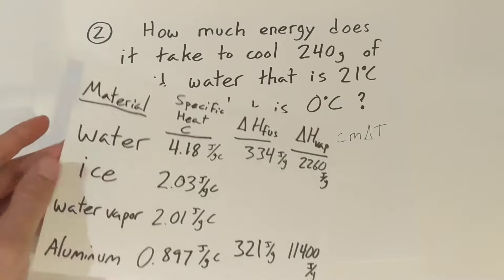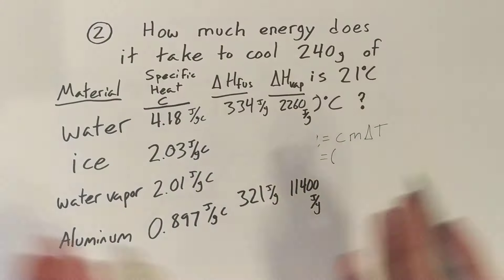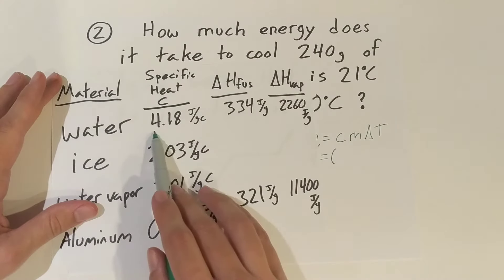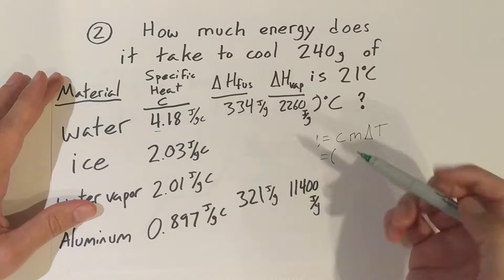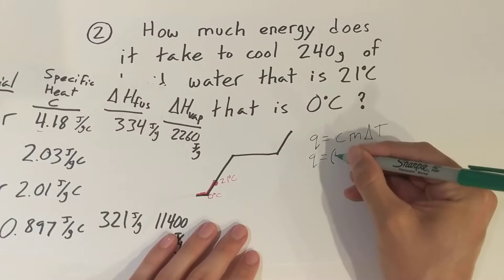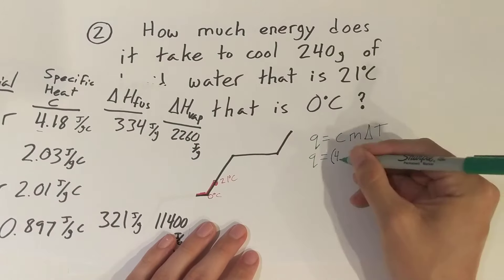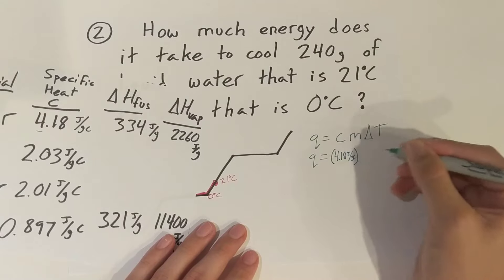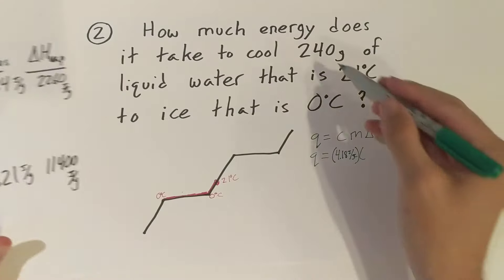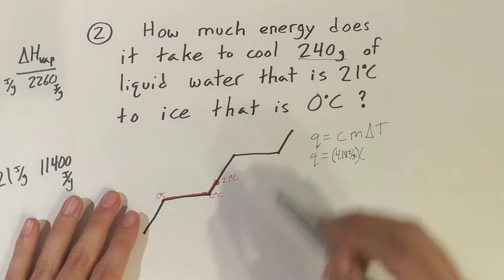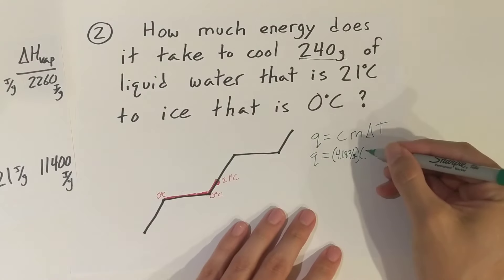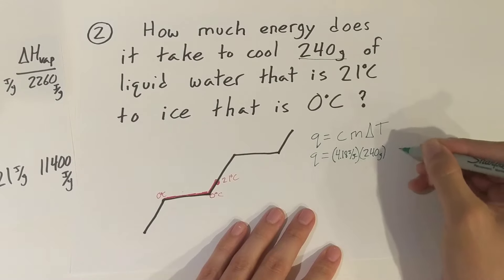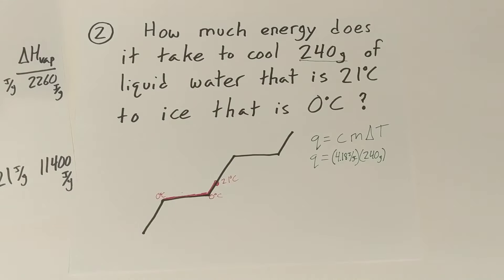Let's start plugging everything in. C is our specific heat. The specific heat of water — we're going to have to look at our table. The specific heat of water is 4.18 joules per gram Celsius. So we put that right here: 4.18 joules per gram Celsius. We can see our mass straight from the question — mass is 240 grams. And our delta T, I'm going to solve that over here so I have room for it.